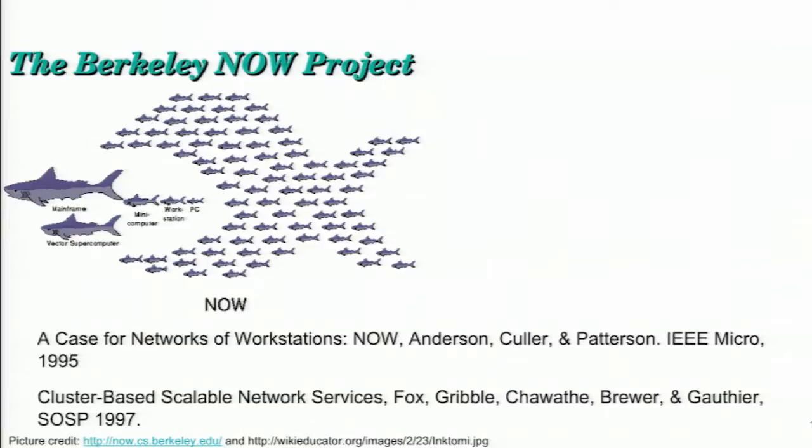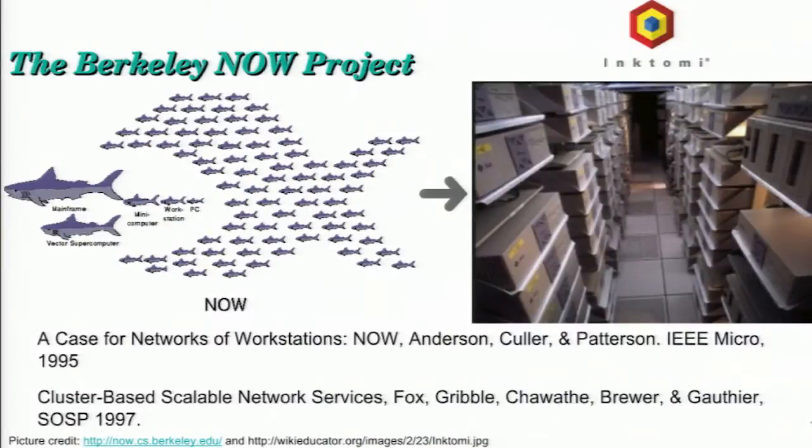One of the earliest projects recognizing that a bunch of computers plus a high-speed network would be a powerful thing — you can see it swallowing up mainframes and vector computers — was the Berkeley NOW project. It argued that computers are getting cheaper, and by networking them together in the same facility you get tremendous computing power. That led to the founding of Inktomi, one of the early search engines using networks of Sun workstations.